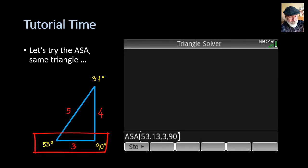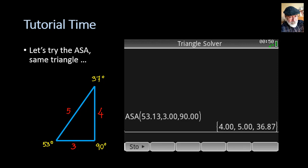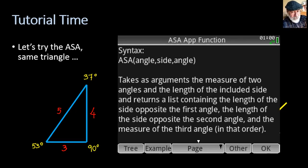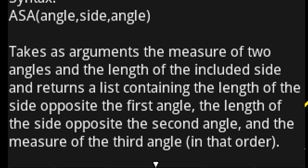Let me try that again with ASA and the same triangle 3, 4, 5. The angles are 37, 53, and 90 degrees. We already know that. Let me choose the two angles at the bottom and the side between them: 53, 3, and 90 degrees. Let me call ASA with 53 degrees, 3, and 90 degrees. That is the solution I get out of the calculator. 4, 5, and 37. The missing 3 parameters. But who are they? They are the side in front of the first angle, the side in front of the second angle, and the third missing angle. I would have to use that a few times to remember the sequence, right? The help of the app says this: ASA takes as arguments the measure of two angles and the length of the included side. Returns the list containing the length of the side opposite to the first angle, the length of the side opposite to the second angle, and the measure of the third angle in that order. Exactly what I said before.